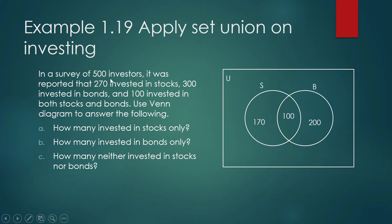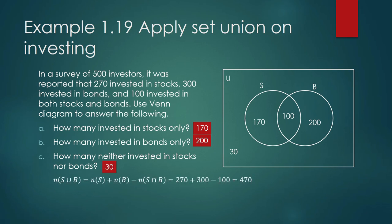The number of investors in S union B is 170 plus 100 plus 200, which is 470. But our total investors are 500, so that means we have 30 more investors who did not invest in either stocks or bonds. Using the inclusion-exclusion principle: n(S union B) equals n(S) plus n(B) minus n(S intersection B), which is 270 plus 300 minus 100, equal to 470.